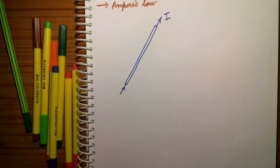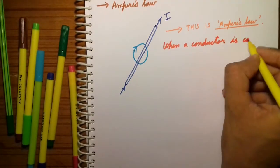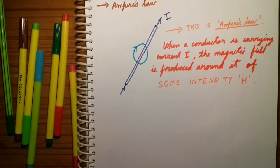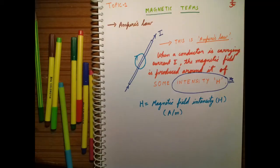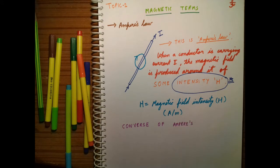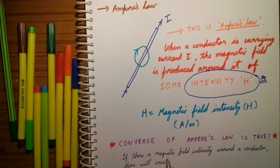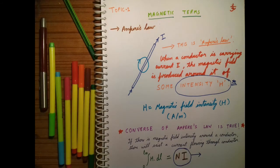What is Ampere's law? In easy words, it is the magnetic field that is produced due to the current carrying conductor, and it has to be limited by something — that is H, where H is equal to magnetic field intensity, as shown on the screen. The important part is that the converse of Ampere's law is also true: if there is magnetic field intensity around the conductor, there will exist a current flowing through the conductor.